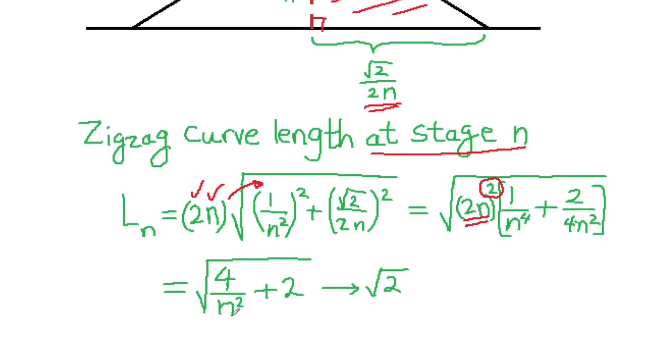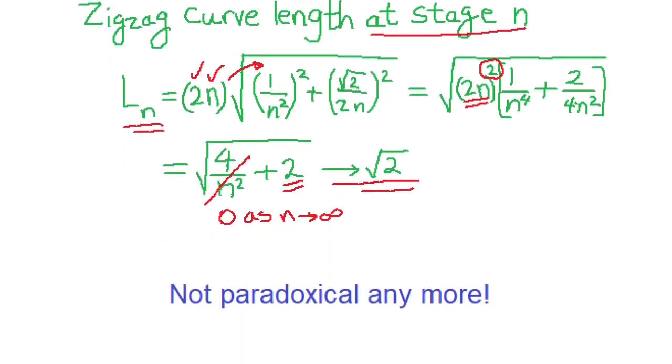And notice that as n goes to infinity, this goes to 0. 4 over n squared goes to 0 as n goes to infinity. And what we are left under the root is just 2. So l_n converges to square root of 2. And notice that square root of 2 is just the length of the diagonal, which is what we were trying to get to. And therefore, we do not have a paradox anymore.